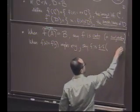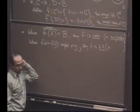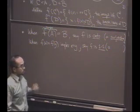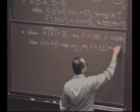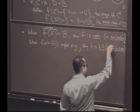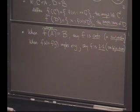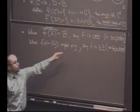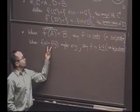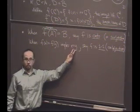We have a special word we might associate to F. We'll say F is not a surjection, but an injection. So this is another way of saying it only sends one point to one point. If the image of two points is the same, those two points have to be equal.